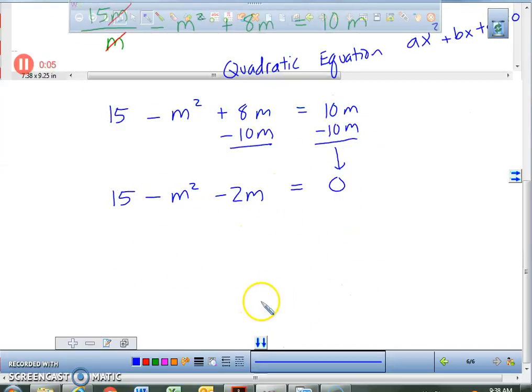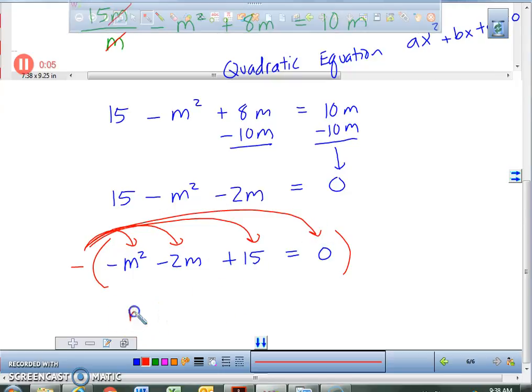Now, let me order things. Let's get things in order. Negative M squared minus 2M plus 15 equals 0. Now, if you don't like dealing with a negative M squared, a very easy way to deal with that is to multiply everything by a negative. Which means if we multiply everything by a negative, you'll get M squared plus 2M minus 15 still equals 0. So, the negative times the 0 is still 0.